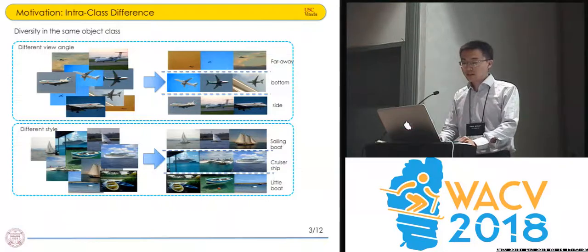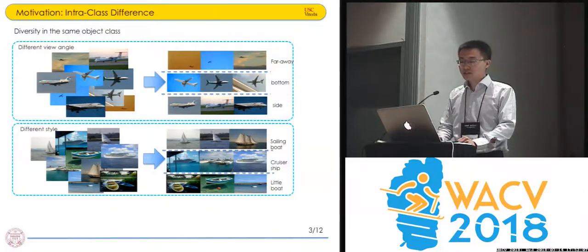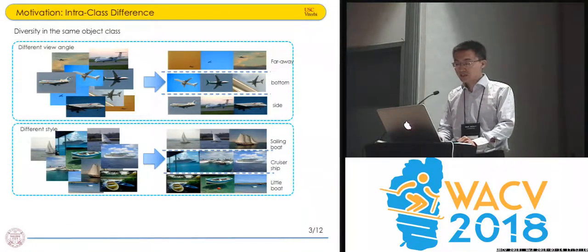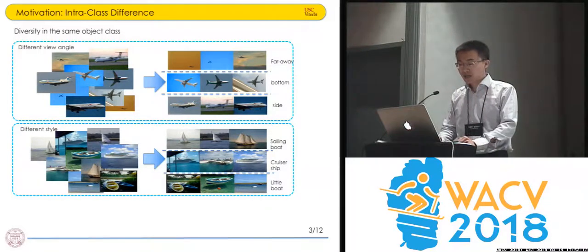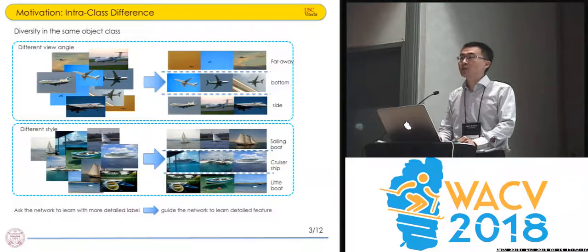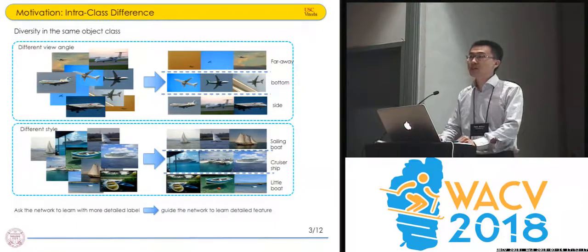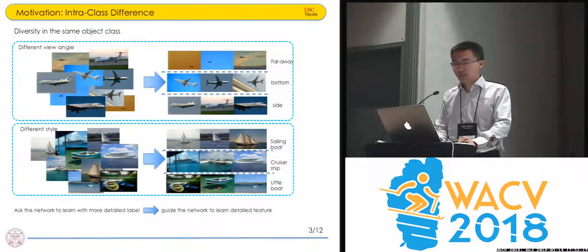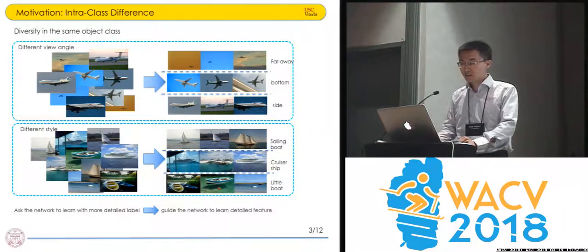We can see there is some diversity in some object classes. For example, the airplane class — we can see some airplanes from very far away, and we have some bottom view and some side view. And there are some different styles for the boat class: there are sailing boats, cruiser ships, and little boats. So we want to ask the network to learn with more detailed labels so they can learn detailed features.